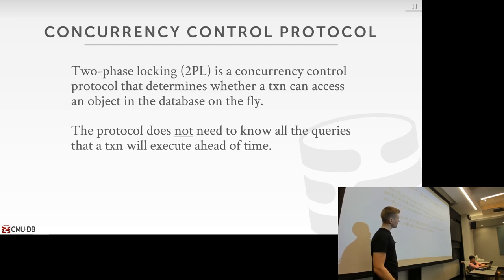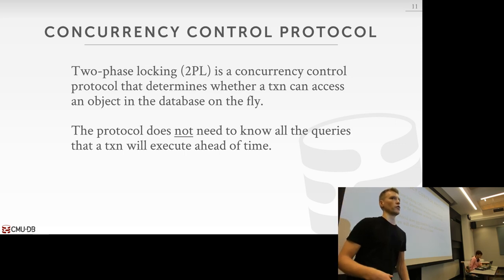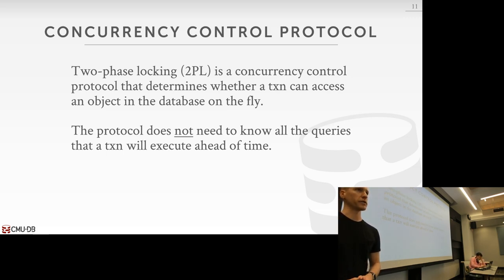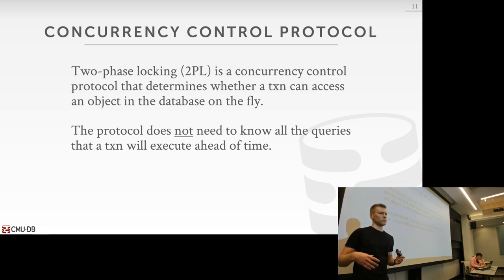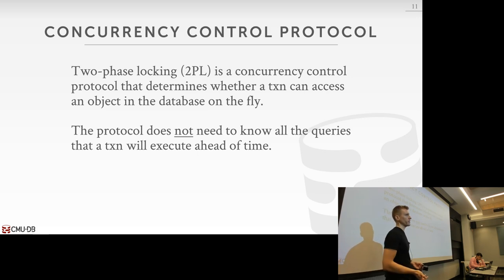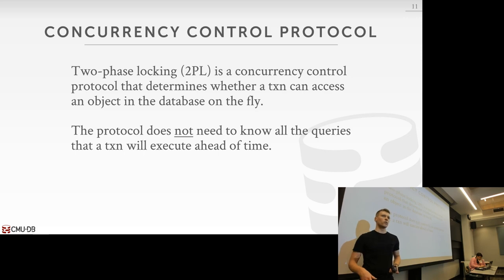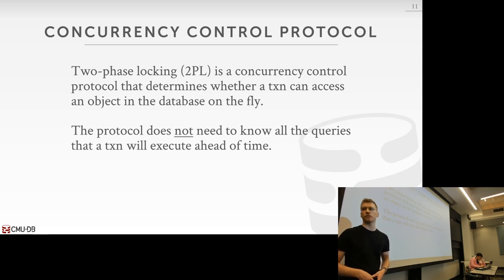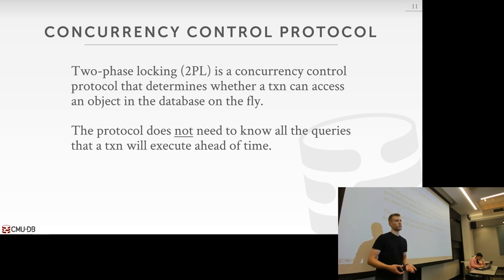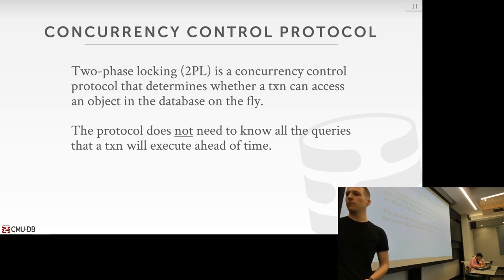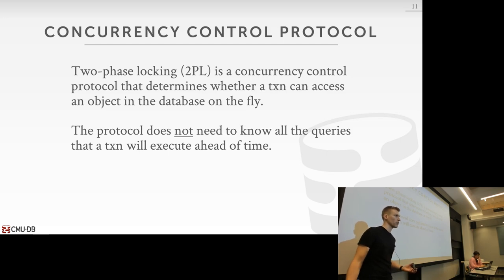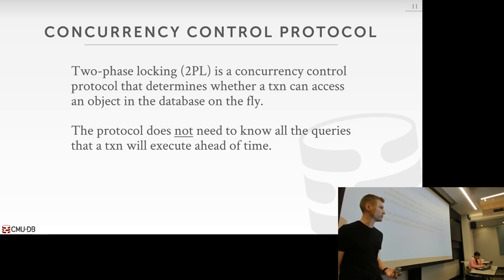We're going to use a protocol called two-phase locking, which allows the database system to hand out locks in a manner that always guarantees conflict serializable schedules. This is a big deal because we don't need to limit parallelism or know what transactions are going to do ahead of time to decide if they're conflict serializable. This work came out of IBM in the mid-70s for the System R project, led by Jim Gray, who later won a Turing Award.